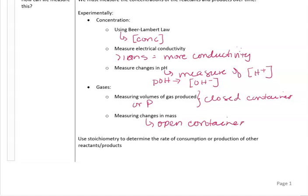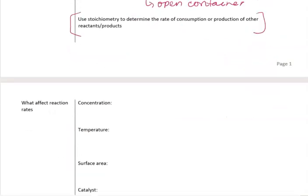Once we can measure the change in concentration of one thing — either one reactant or one product — we can use the stoichiometry of the balanced equation to help us figure out the changes in concentrations of all the other species involved in that reaction.